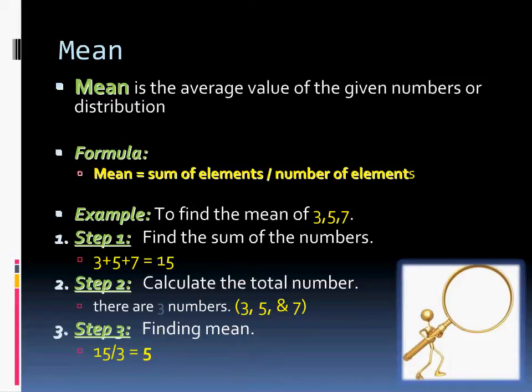I'm not calling you mean — I'm saying that the numbers have a mean to them. This is what we consider the average. Out of a set of numbers, what is the average? Mean is the sum of all the elements divided by the total number of elements. For example, with survey responses of 3, 5, and 7: first, find the sum — 3 plus 5 plus 7 equals 15. Second, count the numbers — there are three. So the mean is 15 divided by 3, which equals 5.